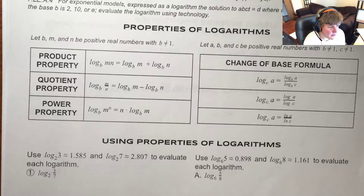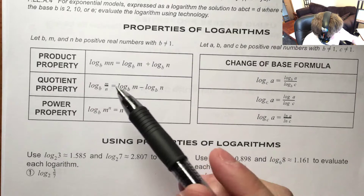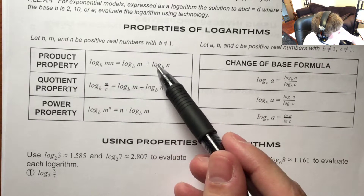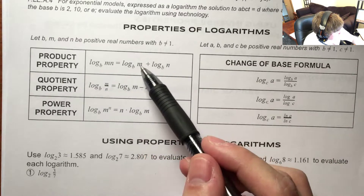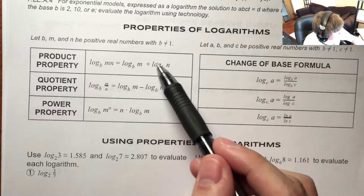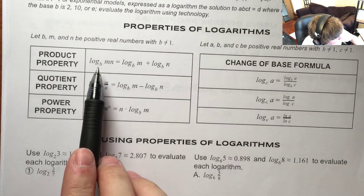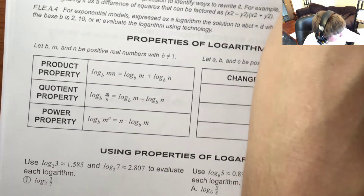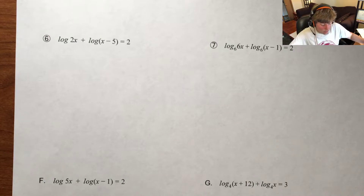The product property says that if I'm adding two logarithms with the same base, it's really the same as if I take that logarithm with that same base and just multiply these parts together. And remember that these properties go either direction, so we can actually rewrite in almost whatever order we want.